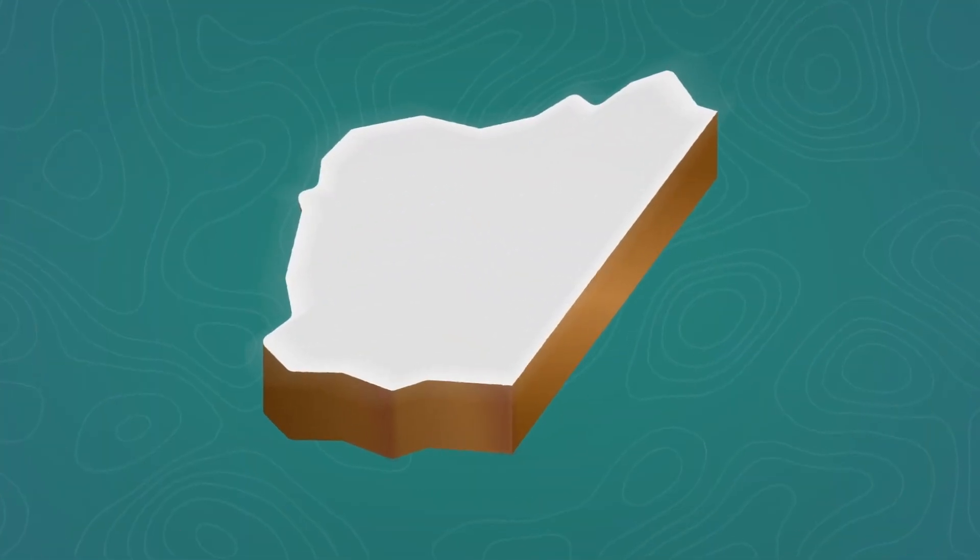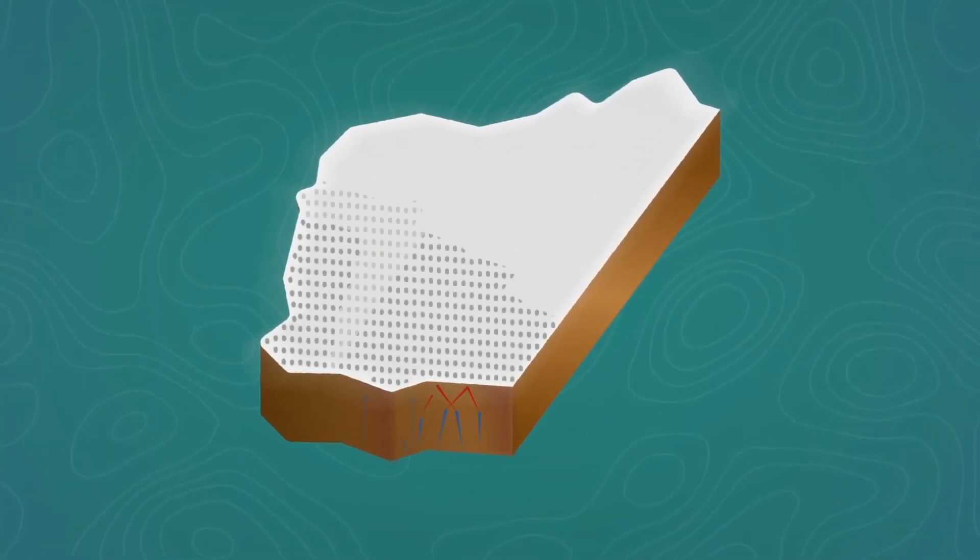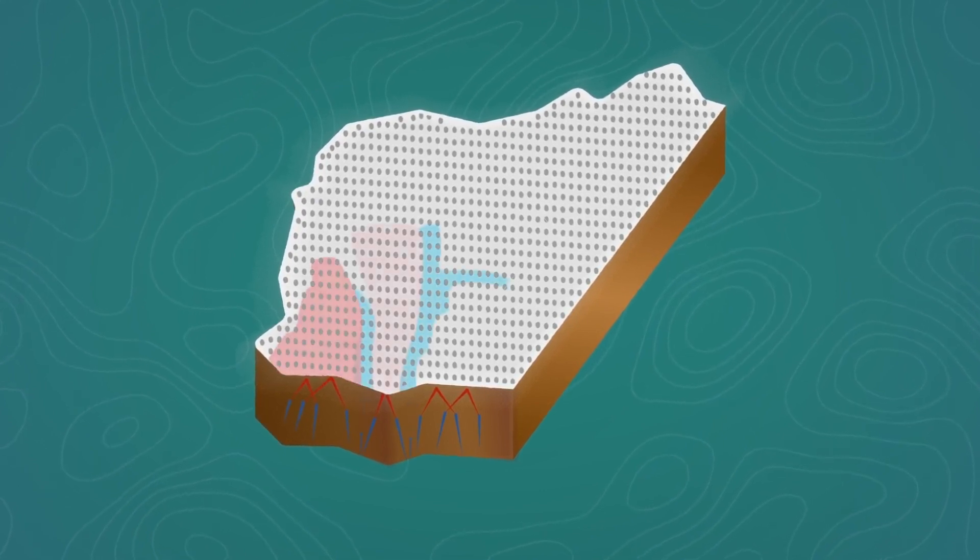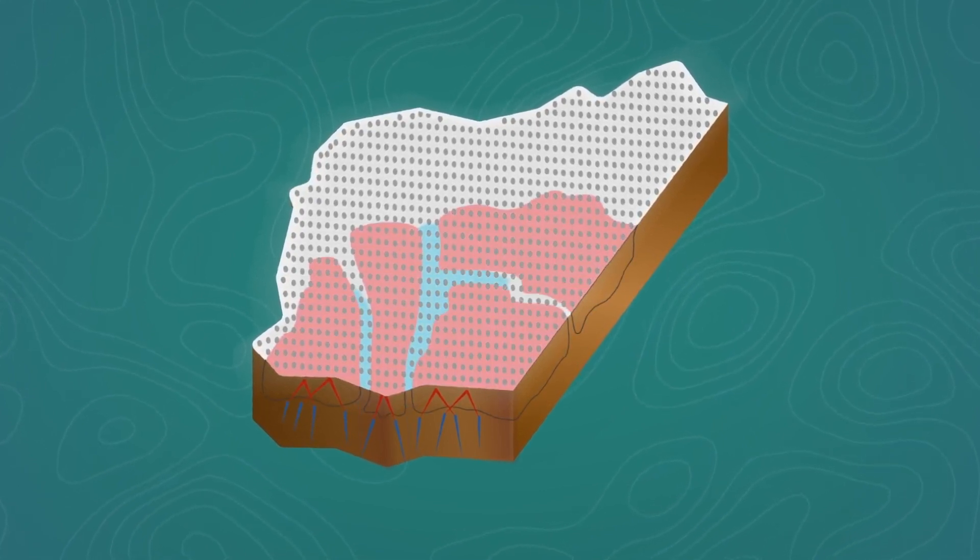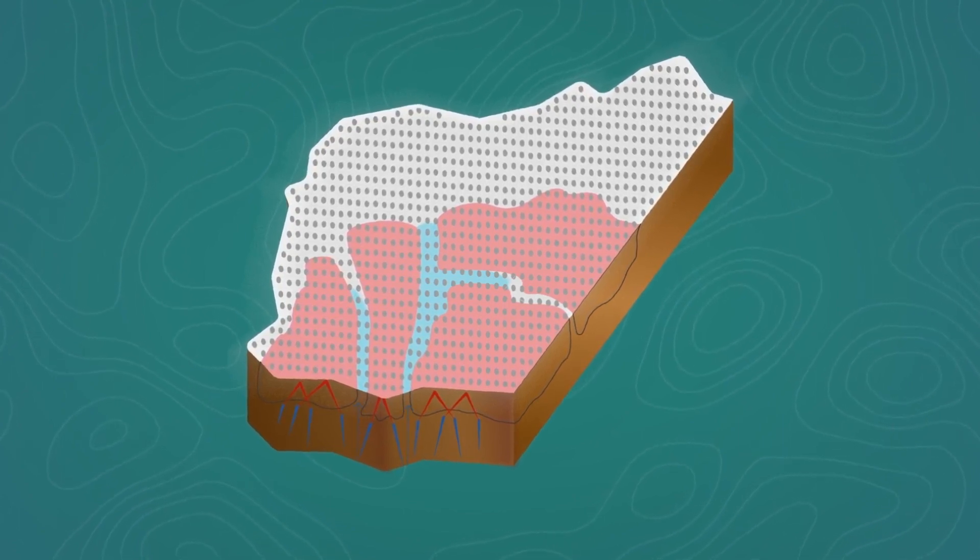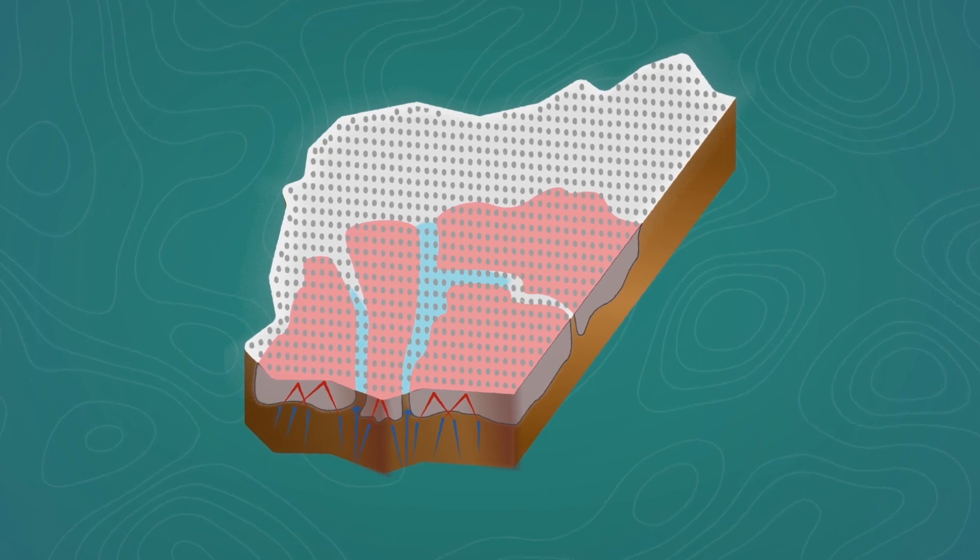The WA Array will help image the size, shape and position of areas with different seismic velocity. This information will help determine where the edges of all lithospheric blocks might be in WA, and highlight different geological domains and structures.